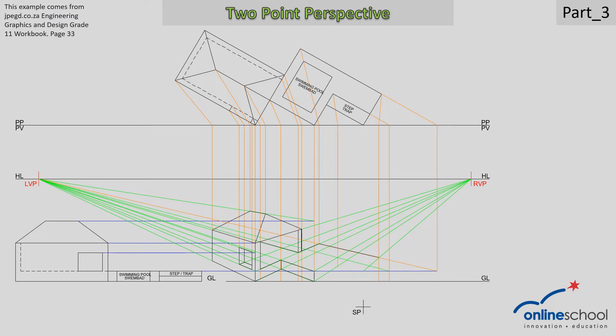From this reference point I've now drawn a light construction line all the way to my left vanishing point. That construction line gives me an intersection and with that intersection I'm going to draw in that corner of the swimming pool and the top ledge of my step.